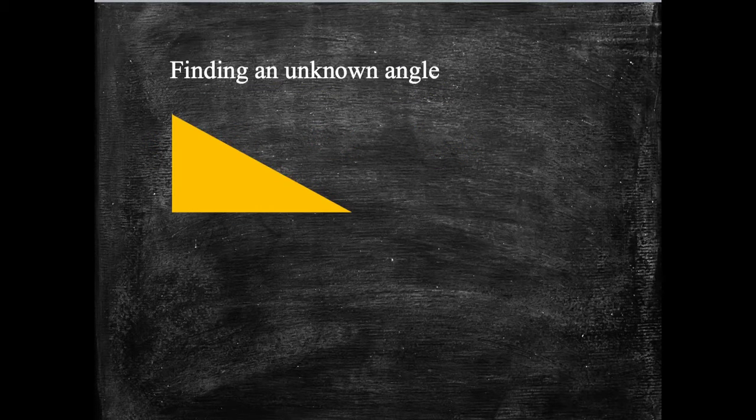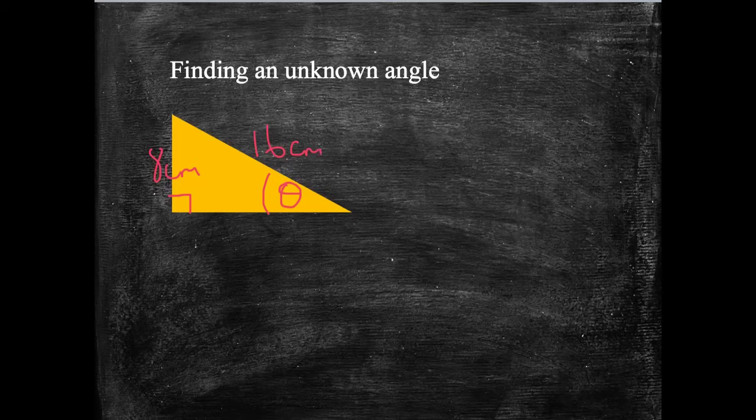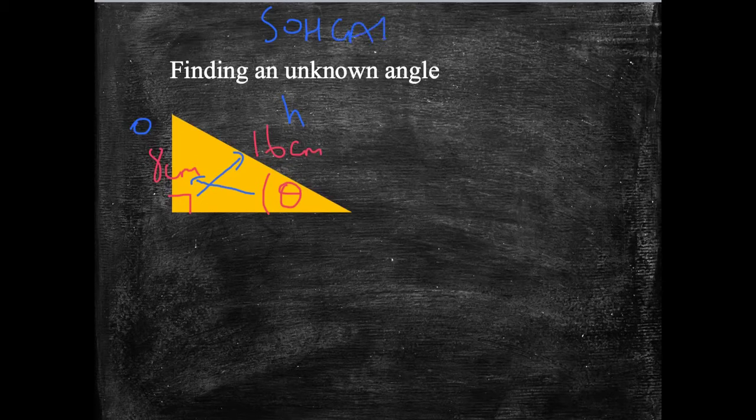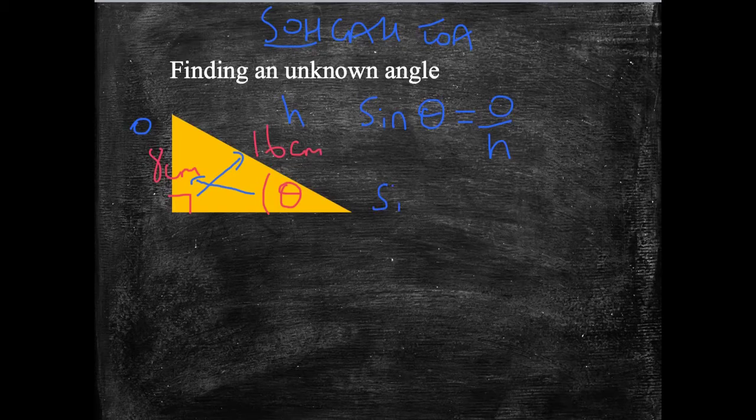I'm going to say that the unknown angle we're looking for is here, theta. Here's my right angle, and I'm going to give you two lengths: 8 centimetres and 16 centimetres. In order to work out the missing angle, we first need to think about whether we've got the opposite, adjacent, or hypotenuse. The 8 centimetre one is opposite the angle, so we'll call it O. The 16 centimetres one is opposite the right angle, the longest side, we'll call that H. We remember from our SOH CAH TOA that the one involving O and H is sine. So sine of an angle equals opposite over hypotenuse. Sine of the angle equals 8 centimetres over 16 centimetres.